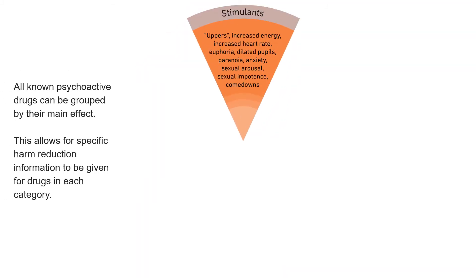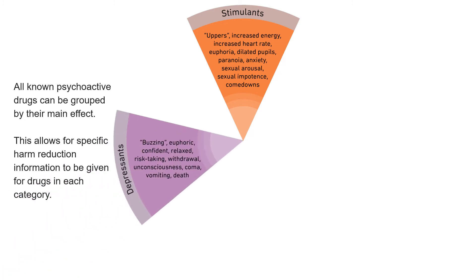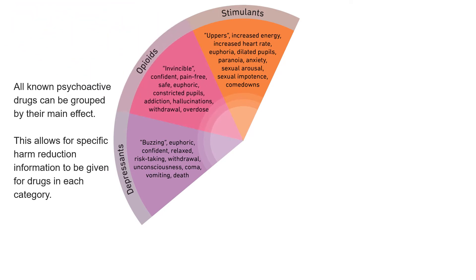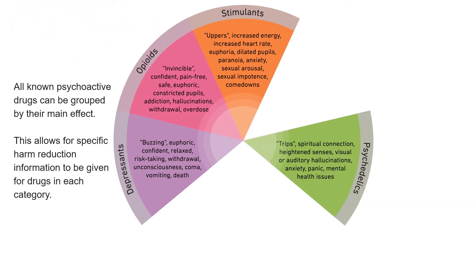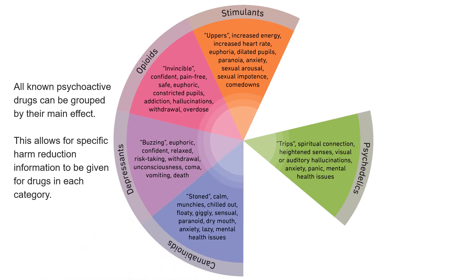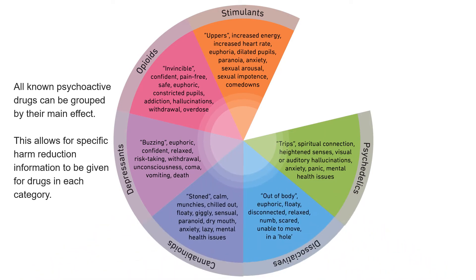As of 2020, 820 new psychoactive substances have been reported to the European Union Early Warning System. Using the categories of the Drugs Wheel allows for harm reduction information to be given by category. This version of the Drugs Wheel gives a summary of the effects of each category.